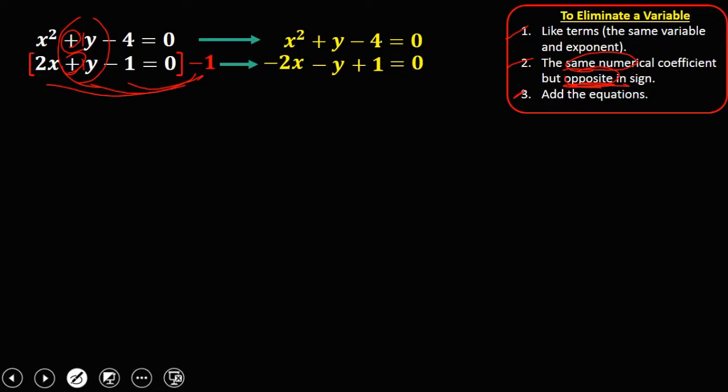Then add the equations, so we can eliminate now this y, the positive y and the negative y. Then since we cannot combine these two terms, just bring it down, so x squared minus 2x, then negative 4 plus 1, that's negative 3, equals 0.